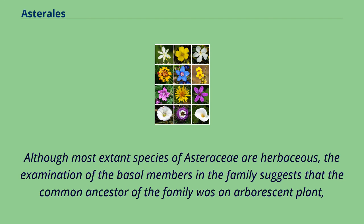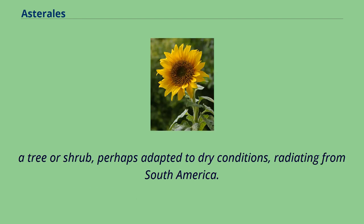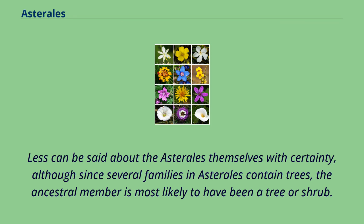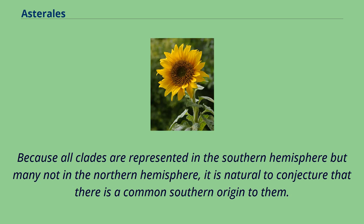Although most extant species of Asteraceae are herbaceous, examination of the basal members of the family suggests that the common ancestor was an arborescent plant — a tree or shrub, perhaps adapted to dry conditions, radiating from South America. Less can be said about the Asterales themselves with certainty, although since several families in Asterales contain trees, the ancestral member is most likely to have been a tree or shrub. Because all clades are represented in the southern hemisphere but many not in the northern hemisphere, it is natural to conjecture that there is a common southern origin to them.